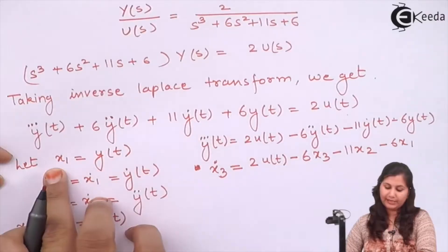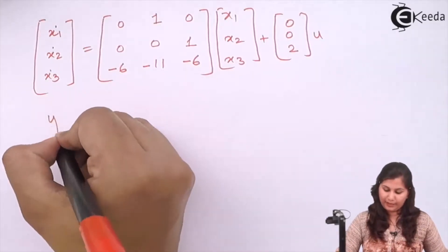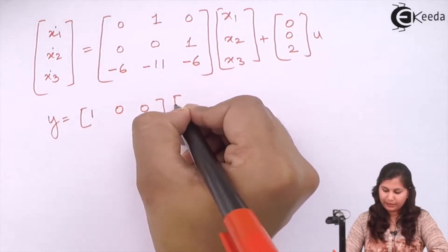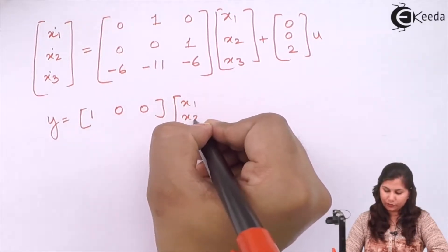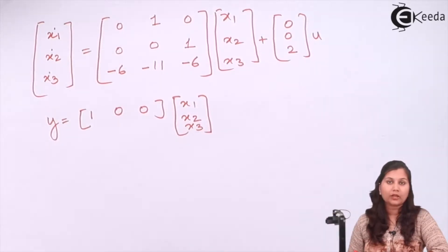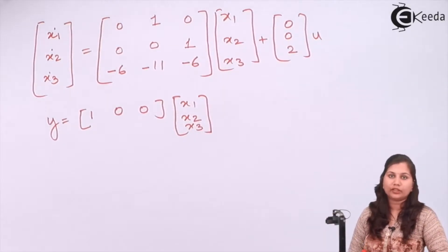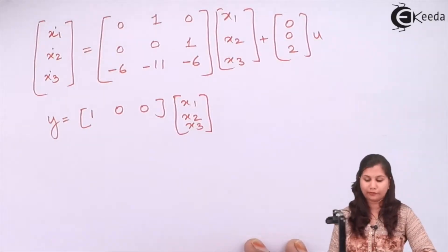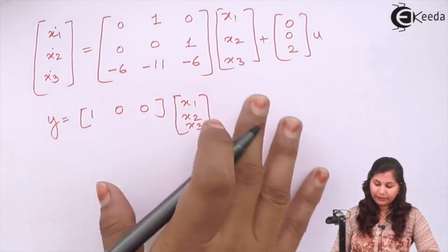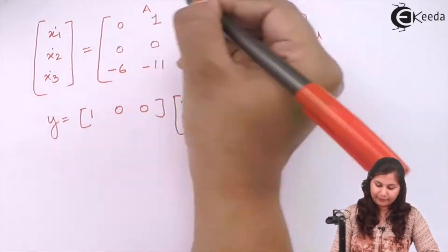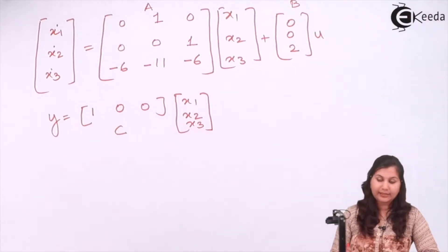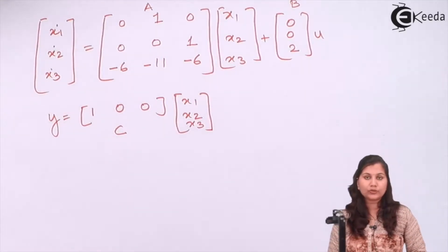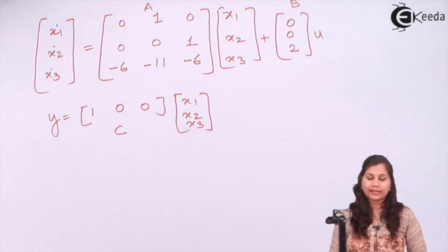The output equation is y = x₁, so y = [1, 0, 0] · [x₁, x₂, x₃]ᵀ. This is the state model of the system, derived from the transfer function. In this state model, the A matrix, B matrix, and C matrix are now identified, giving us all the values of matrices A, B, and C.